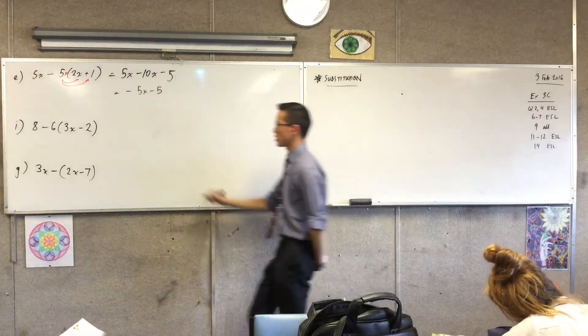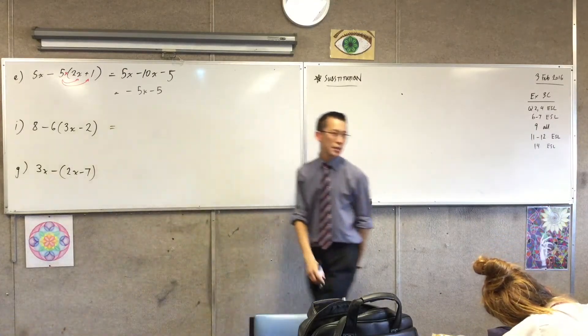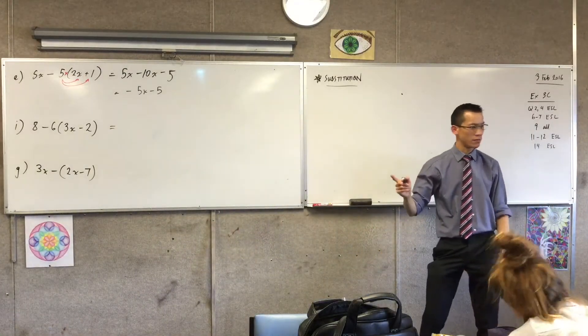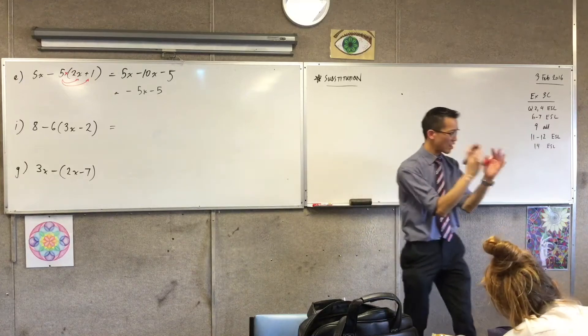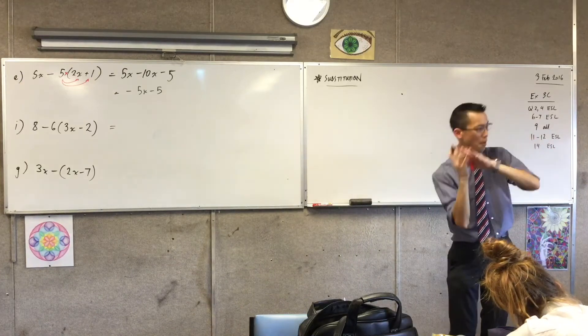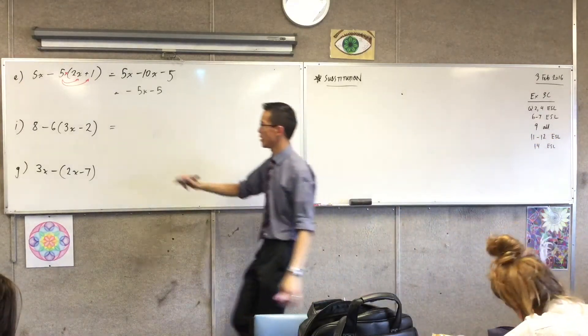So in the same way, let's have a look at this guy. This, you have to be watchful because of the double negative. So again, the take away 6, subtract 6, that's what's going to apply to everything in the brackets.